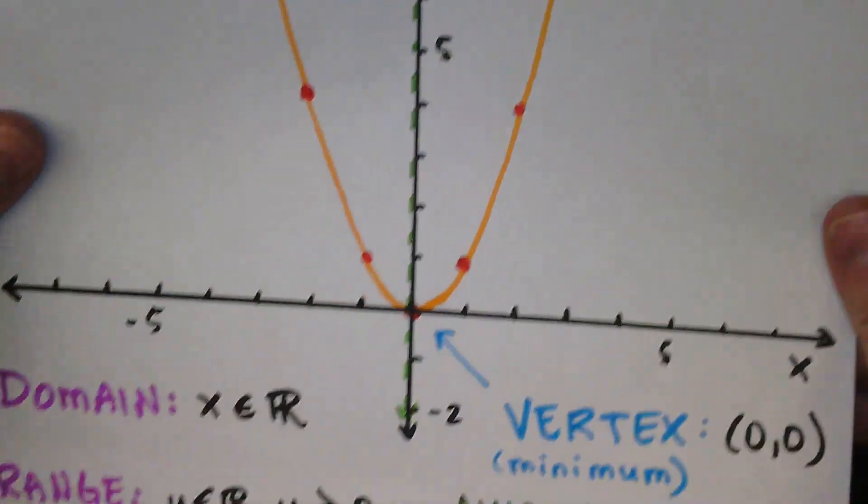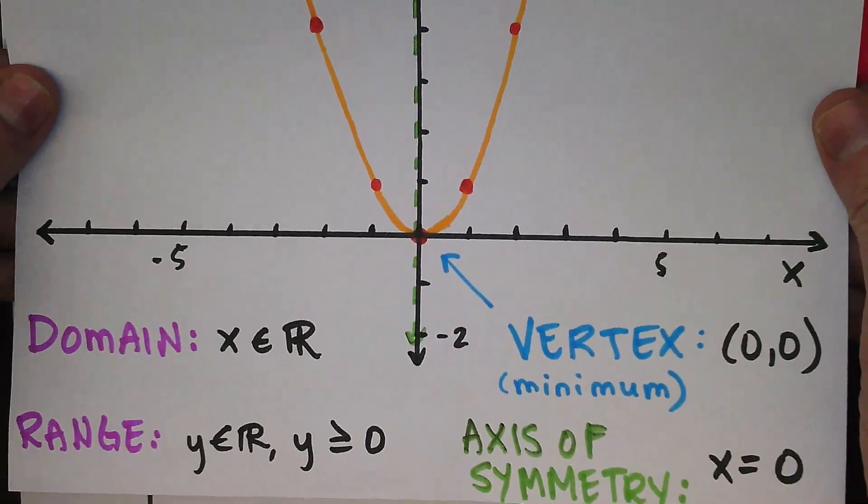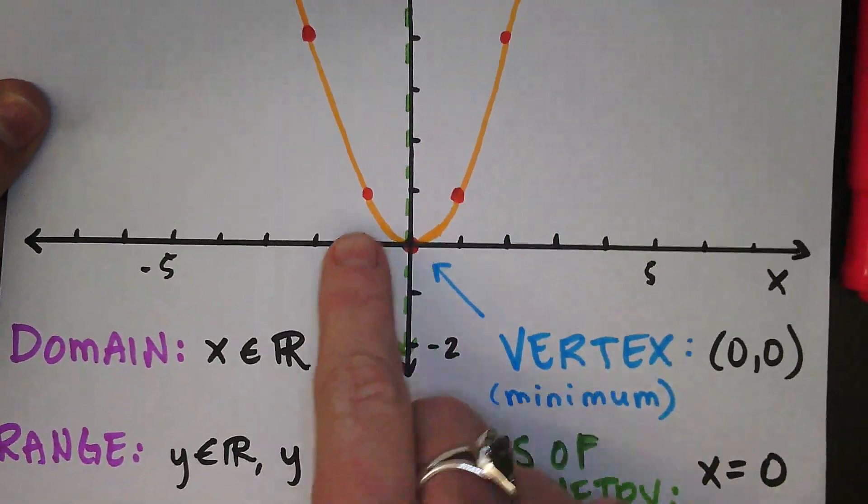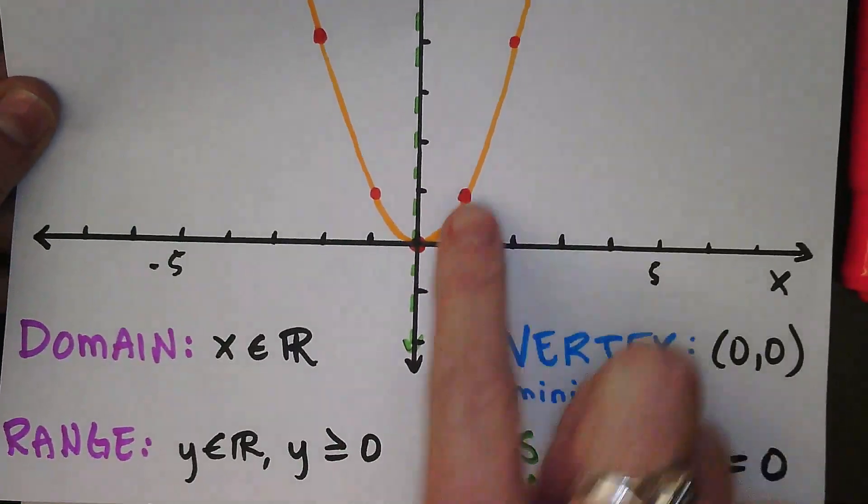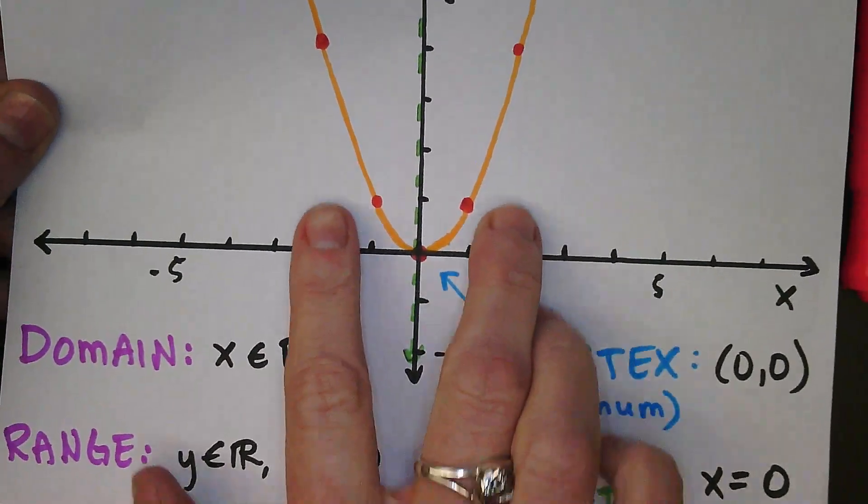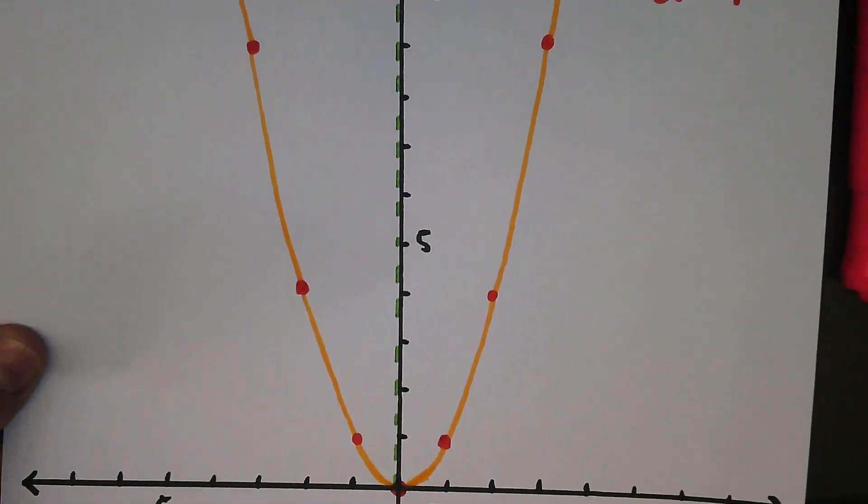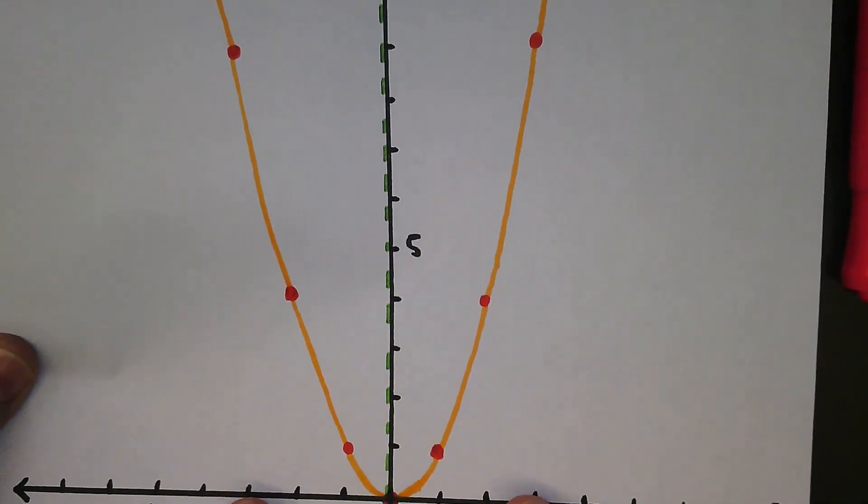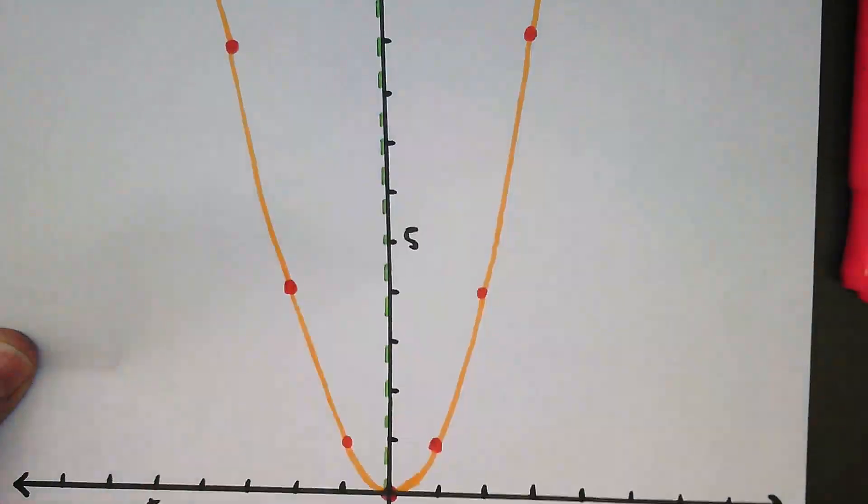The parent function looks like this: vertex centered at the origin, and then the growth follows your perfect squares to the left and right. One up one, one squared is one. To the left and right two and then we go up four because two squared is four. To the left and right three and then up nine because three squared is nine.